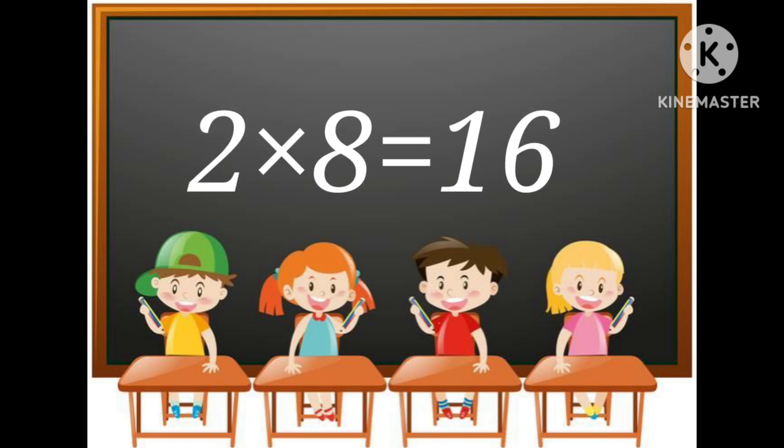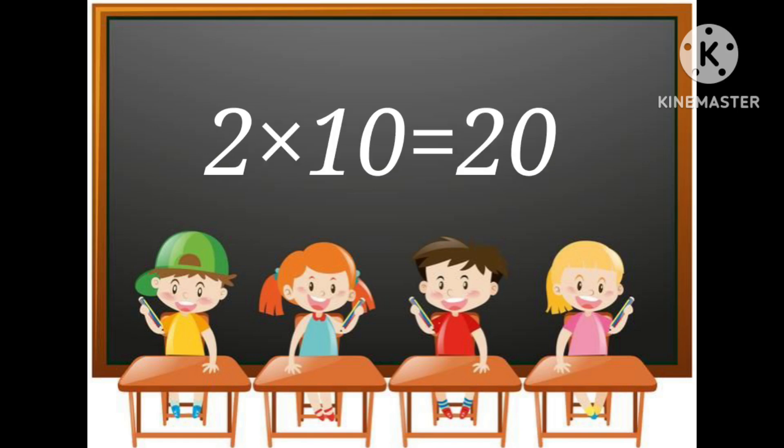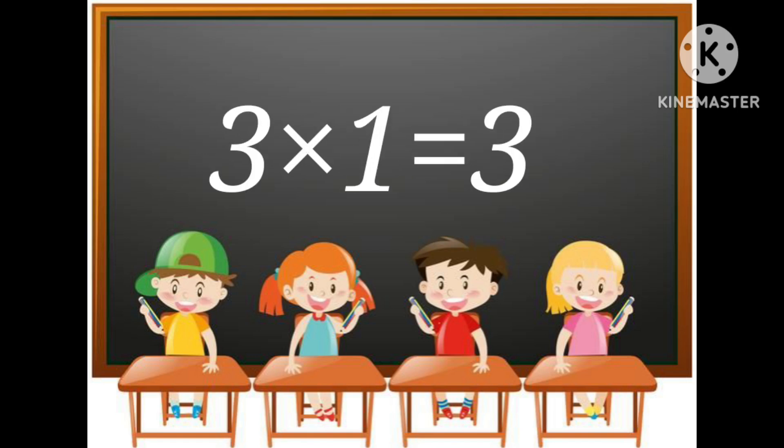2 multiplied by 8 is equal to 16. 2 multiplied by 9 is equal to 18. 2 multiplied by 10 is equal to 20.